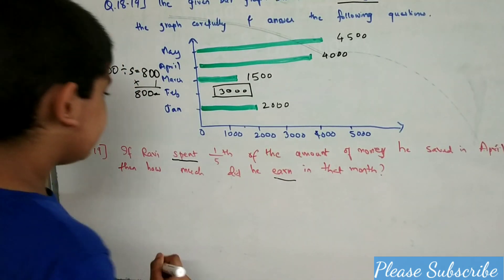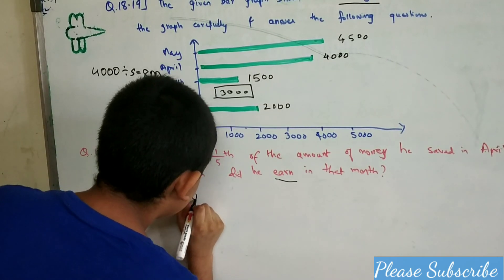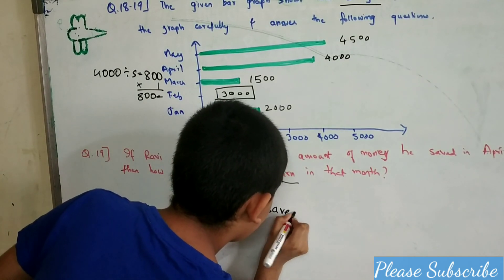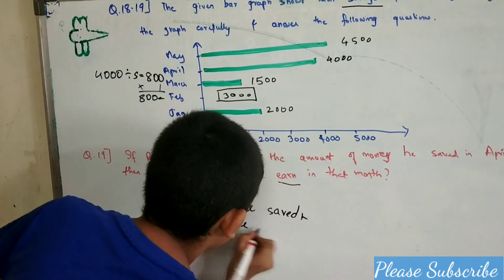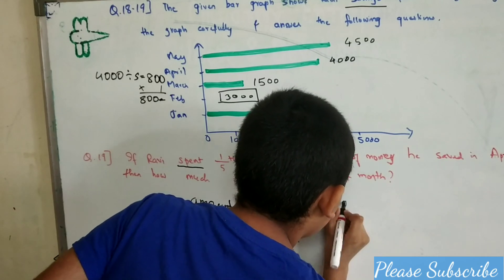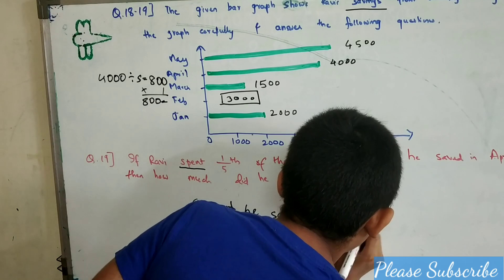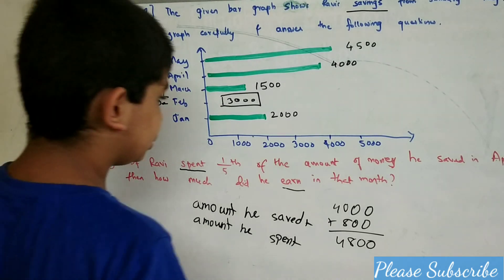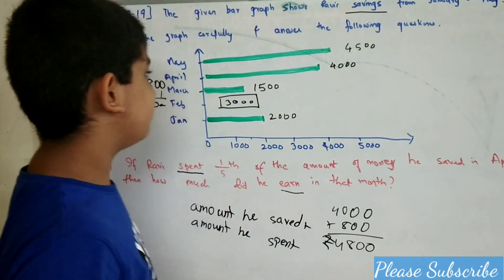Earn means the amount saved plus the amount spent. He saved 4,000 and he spent 1,500. Adding them: 4,000 plus 800 — so he earned 4,800 rupees in that month.